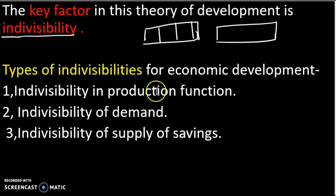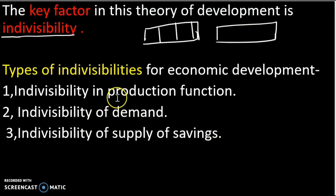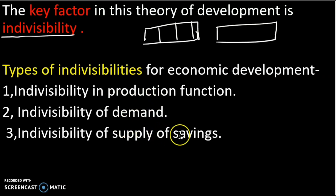The types of indivisibility are: Indivisibility in production function, Indivisibility of supply and savings. In production function, there is a minimum production, a minimum demand, and a minimum savings.